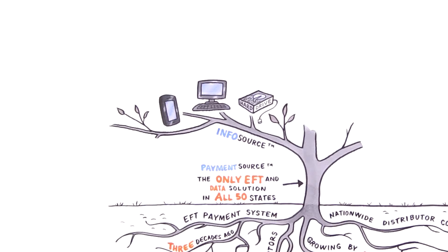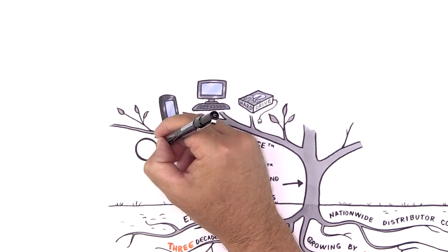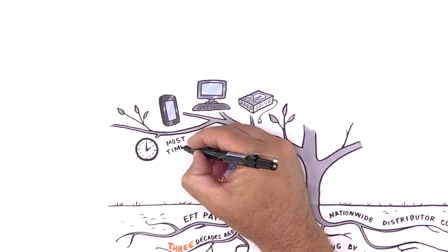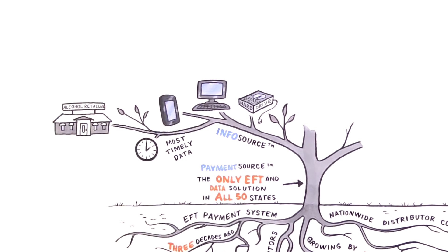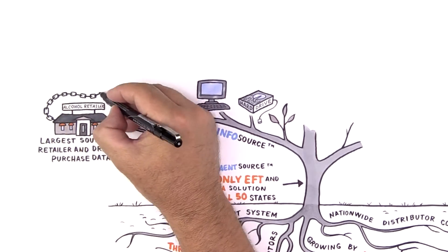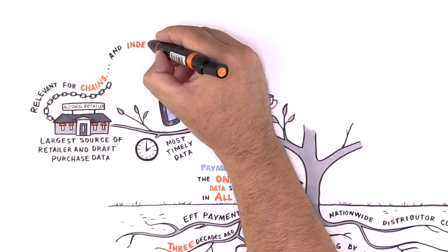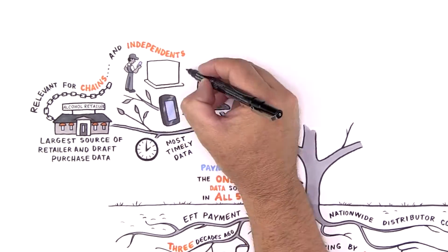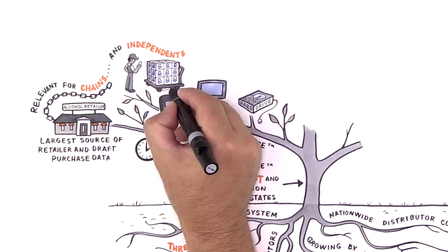InfoSource, the data and analytics branch of FinTech Services, has fueled the growth of our business and gives you the most timely data available. In fact, our data covers the largest source of retailer and draft purchase data in the industry, spanning chains and independents, providing our retailers and distributors with all the information you could possibly need right at your fingertips.